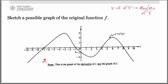Our next x-intercept is at negative 1. There, the derivative is changing from positive to negative, which tells us the original function is going from increasing to decreasing — creating a relative maximum. At x equals negative 1, I'll place a maximum point. Our next x-intercept is at 4, where the derivative changes from negative to positive — another minimum. And our last one at 8, the derivative changes from positive to negative — another maximum point. So now I have all my maximum and minimum points in place.